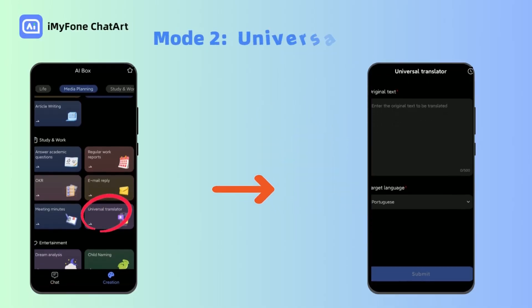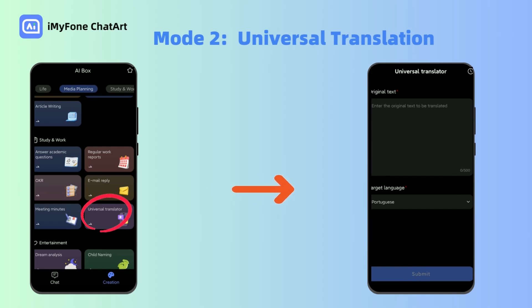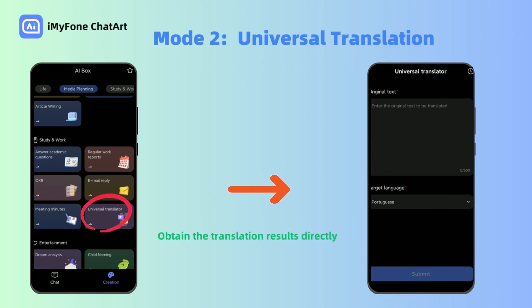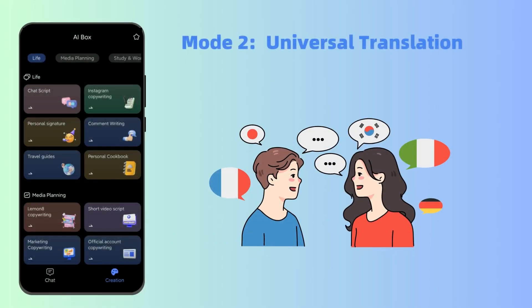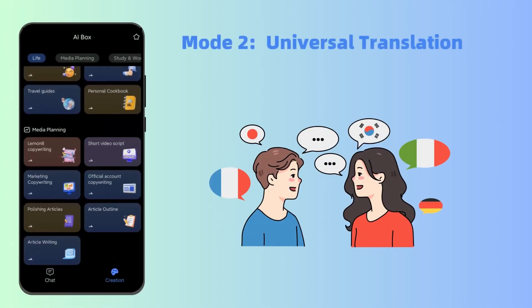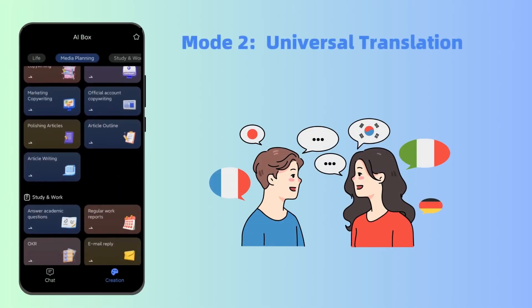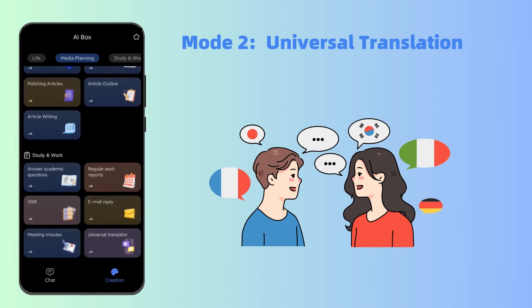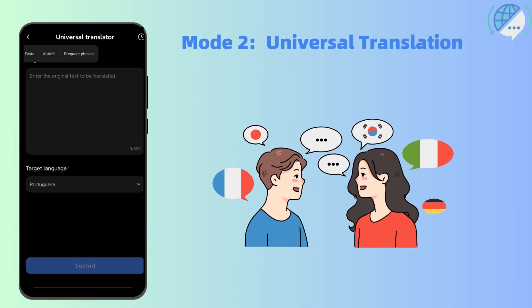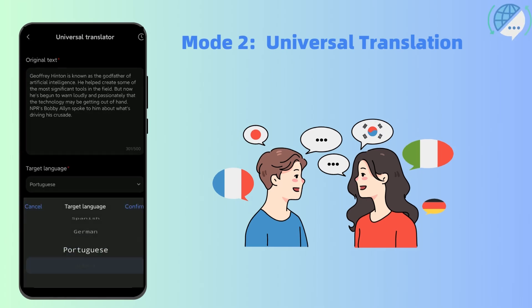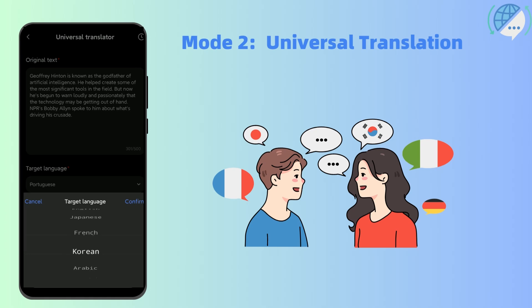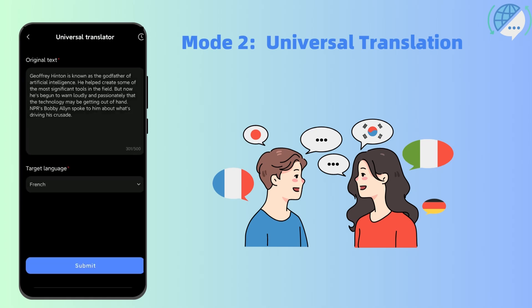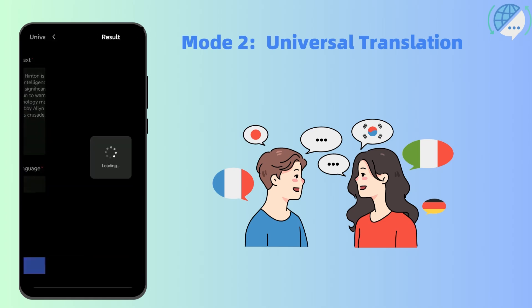The second mode is called universal translation. With this mode, you can directly input the content to be translated and obtain the translation results directly. You can find the universal translation function in the creation section. What you need to do is type the text to be translated in the upper part, choose the target language, and confirm. Then you can get the target text.